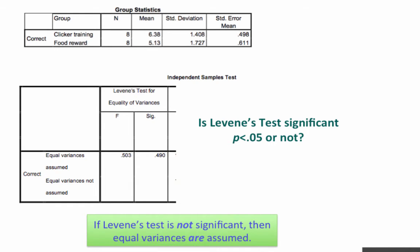Question. Is 0.490 less than 0.05? It is not. It is greater. So is Levene's test significant or not? That is a non-significant test. It is not significant. There is no significant difference between the variances in the groups, and that's good news for us. So we can assume that the variances are equal, or approximately equal. In other words, 1.4 is approximately equal to 1.7. It's close enough for the assumptions of this test.